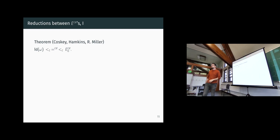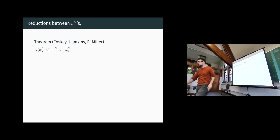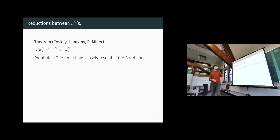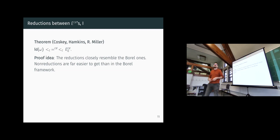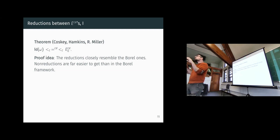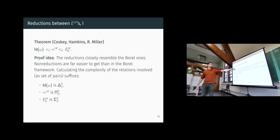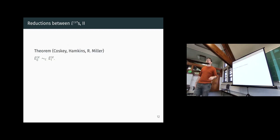Some information from the Borel theory transfers smoothly to the computable side and in fact simplifies a lot. You can show strict reductions that closely resemble the Borel ones — for instance, to reduce equality_C to e0_C you just amplify differences. Obtaining no-reductions in the Borel setting is really hard; you need to develop a lot of techniques, partly because Borel reductions are a coarse notion. But here, reductions are sensitive to the complexity of the relations involved, so it is sufficient to calculate the proper complexity of the relations to obtain no-reductions.